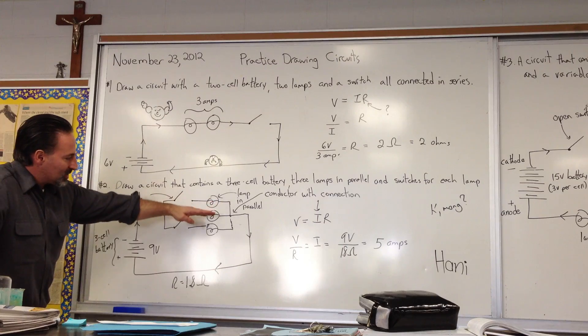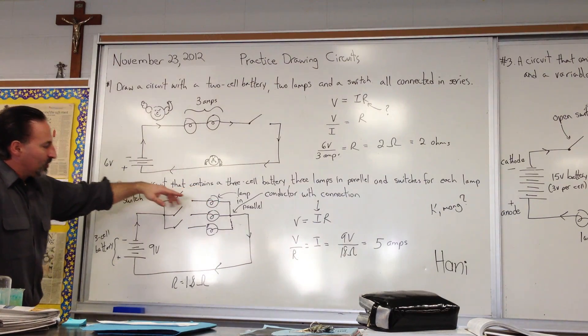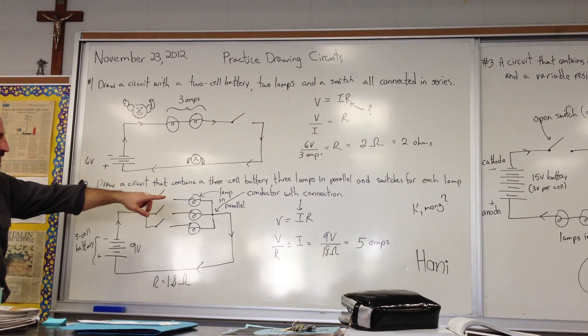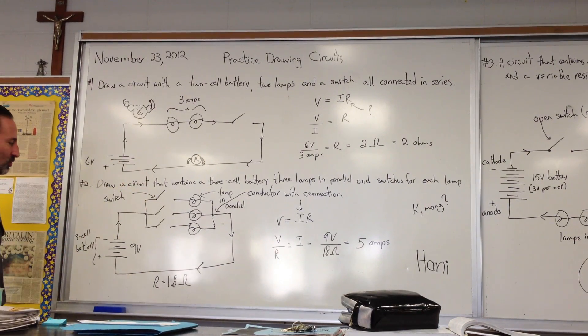So when the lamps are in parallel, it means that the wires are branching from the main conductor, and the current can take a different path for each one.